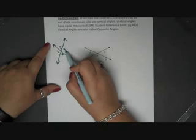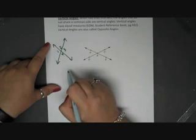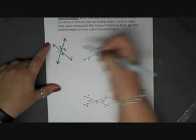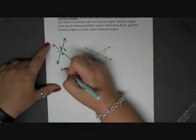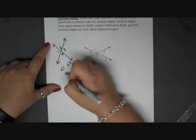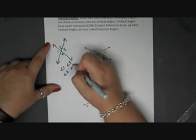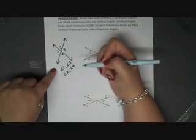So I have angle 1 with angle 3. Again, common vertex, but not a common side. And angle 2 and angle 4 are vertical. So angle 1 and angle 3, and then as well as angle 2 with angle 4. Those are your sets of verticals.